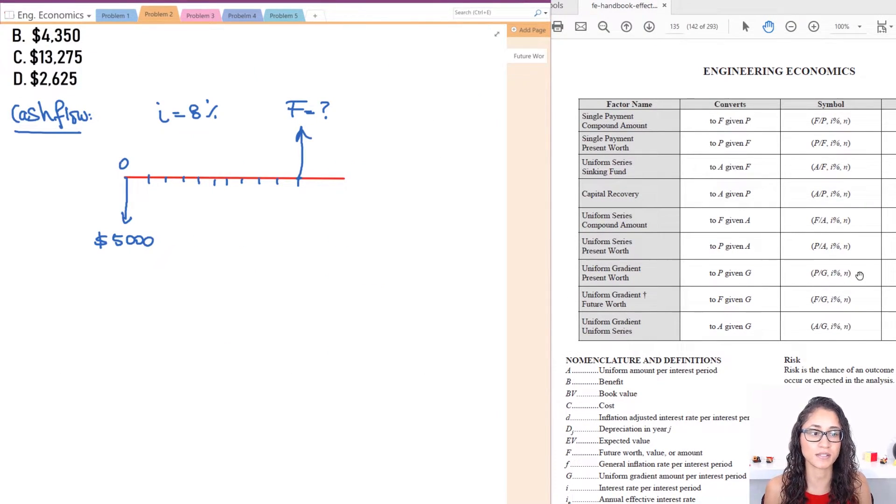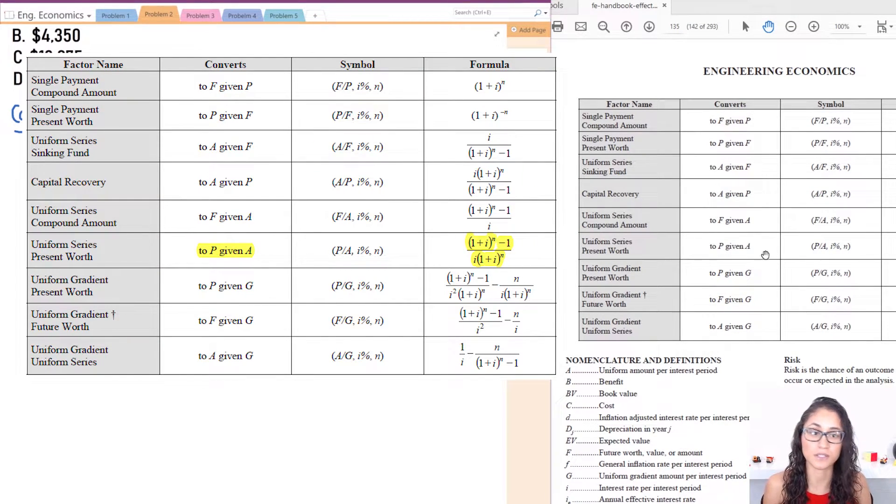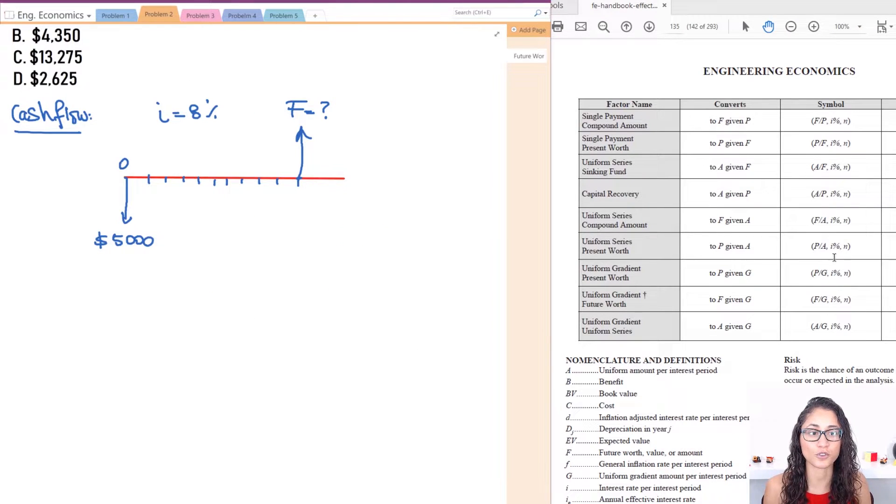Now the only problem is on the test if let's say you were given this one, convert to P given the annual worth, it's going to take you a lot of time if you use this equation versus this one. Now be careful, you should be able to know how to use both because on the test if you aren't given the interest rate that's on the tables, which I'm going to show you in a little bit, then you're in trouble, then you have to use these formulas. So make sure you know how to use both.